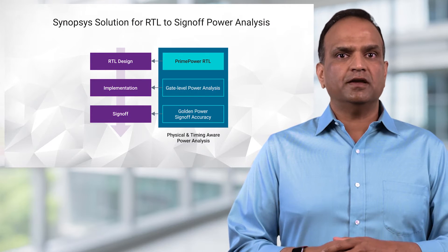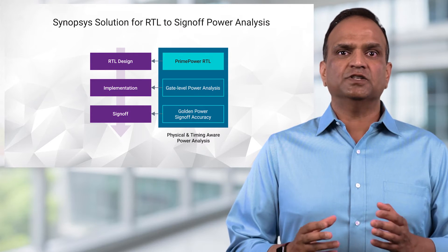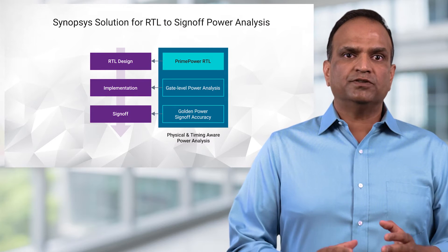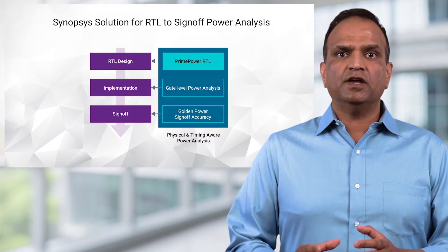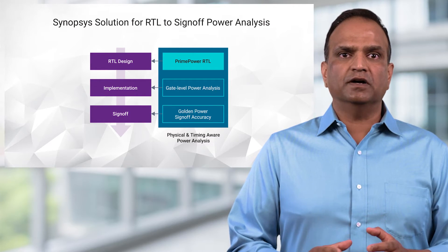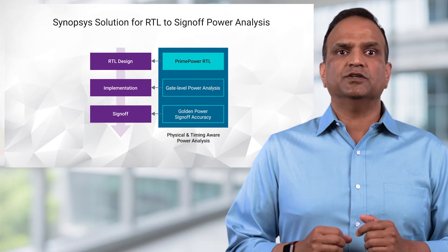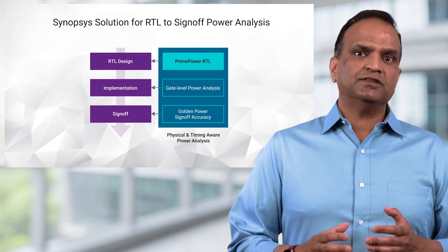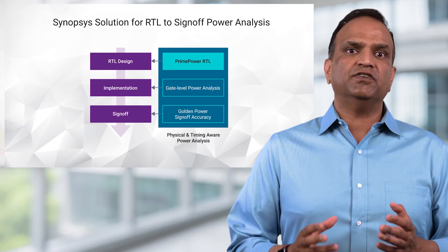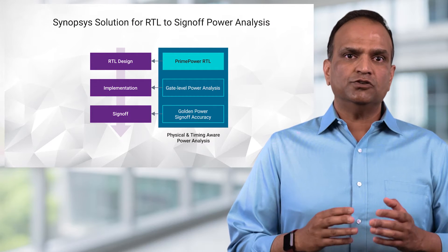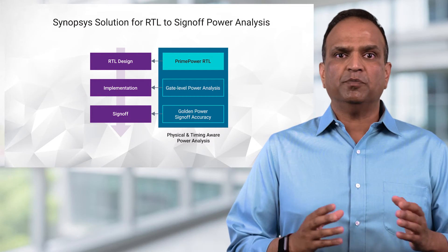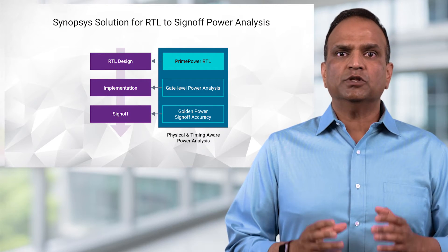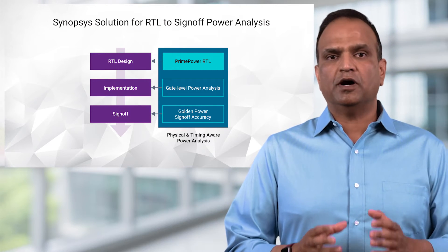RTL designers can make intelligent design tradeoffs for clock and data gating, memory sizing, and identify RTL bugs that can contribute to excessive power in the design. Accuracy of power analysis is key even at this early stage to ensure that the design stays within a power budget and the correct RTL choices are made with quantifiable power savings.